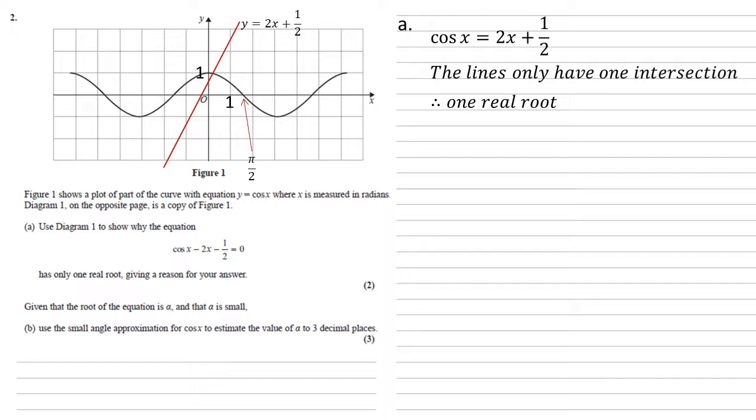For part b, we are told that the root of the equation is alpha and that alpha is small. We're going to use the small angle approximation for cos x to estimate the value of alpha to three decimal places.